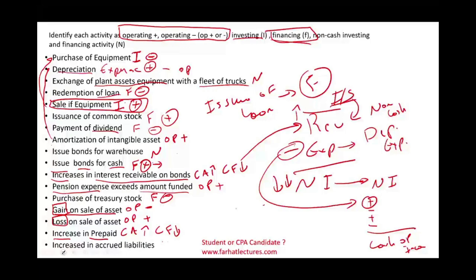Increase in accrued liabilities: when your current liabilities go up, your cash flow is also going up. Why? Because you are accruing — recording liabilities to operate — so the expenses here are non-cash expenses. You are operating the business but not paying cash, therefore it's positive cash flow. Go to Farhat Lectures and work multiple choice questions. You really want to know this inside out. Those items will be given in different formats on the exam — balance sheet format or exhibit format. Invest in yourself; your CPA exam is important. Study hard and stay safe.